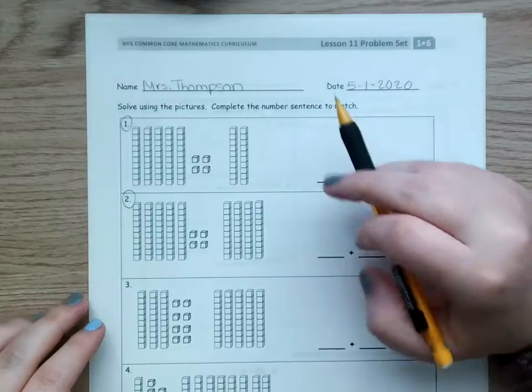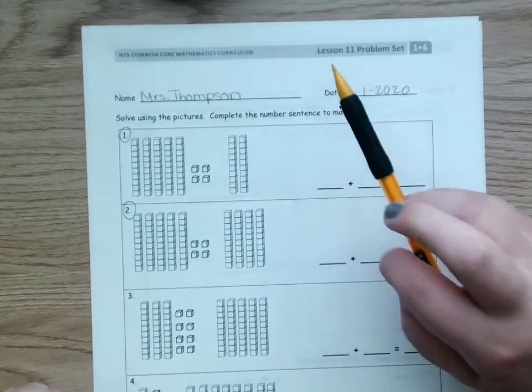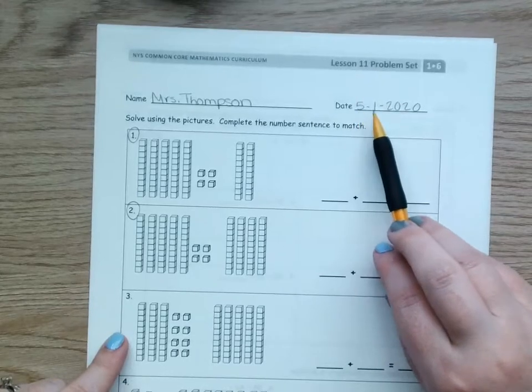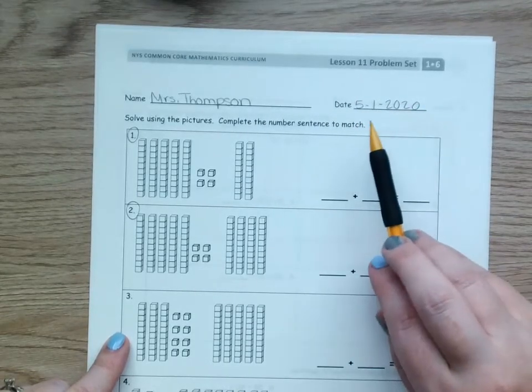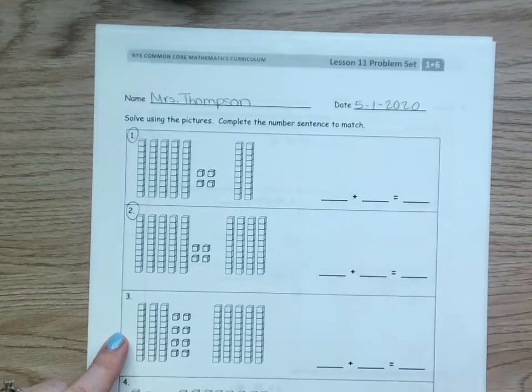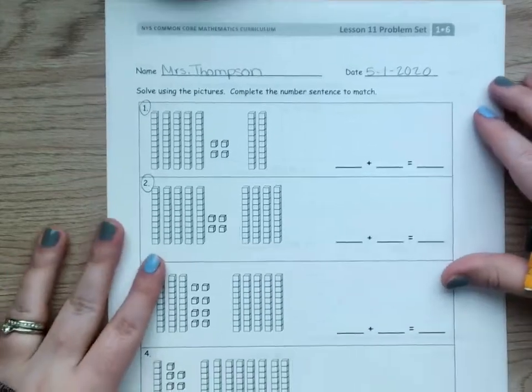Hey there, everyone. I've got lesson number 11 today. Today's date is 5-1-2020, or May 1st, 2020. It's May, finally.